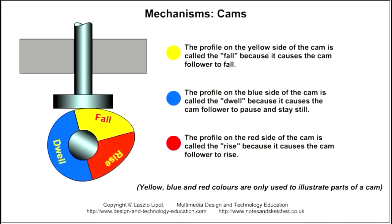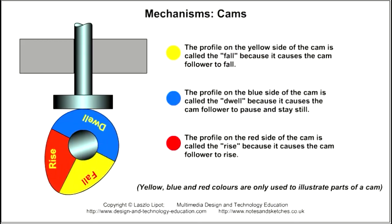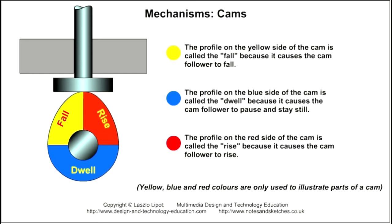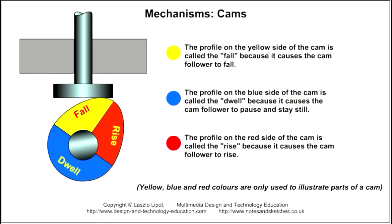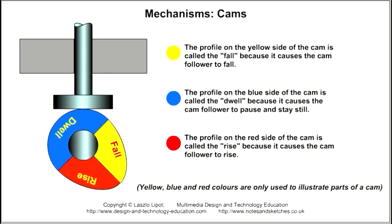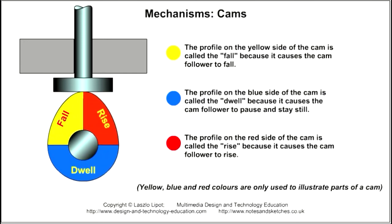The part of the cam that causes the cam follower to fall is called the fall. The part of the cam that causes the cam follower to stay still is called the dwell. The part of the cam that causes the cam follower to rise is called the rise.